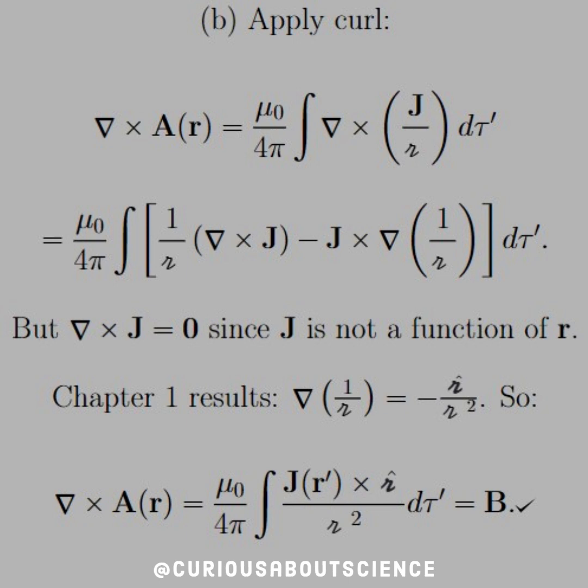To do that, we again apply the product rule, but note on the curl product rule, we have a negative between them. Again, we can argue from the foundations that del cross j equals 0, since j is not a function of r, and it's actually a function of r prime, which we found in the definition.